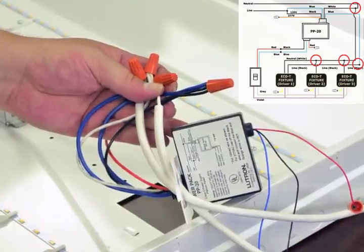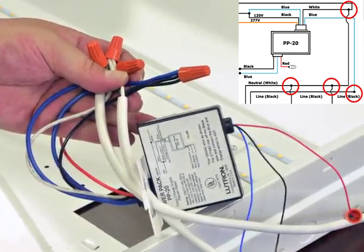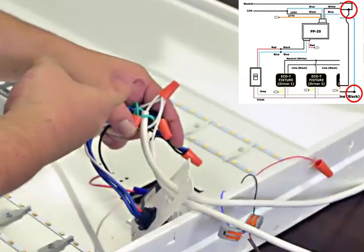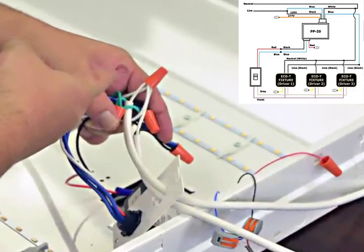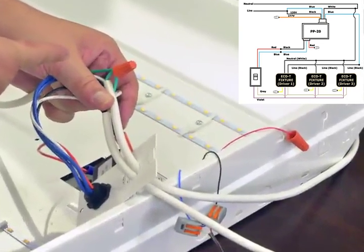We will now connect the other blue from the PP-20 with the black line lead of the driver in the Eco-T fixture. Next, connect the white from the PP-20 with the neutral on the driver. And finally, we tie all the ground leads together in the fixture.